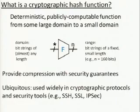So, what is a cryptographic hash function? I'm going to try and keep this pretty accessible. A cryptographic hash function is a deterministic, publicly computable function from some large domain to a small domain — a function f that maps a bit string of almost arbitrary length to some small fixed length, for example, 160 bits. These functions provide compression with security guarantees, and are used quite widely in protocols such as SSH, SSL, and IPsec.